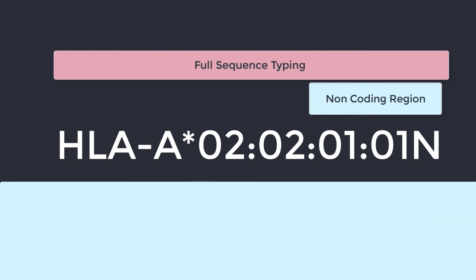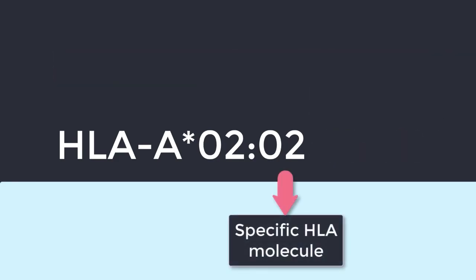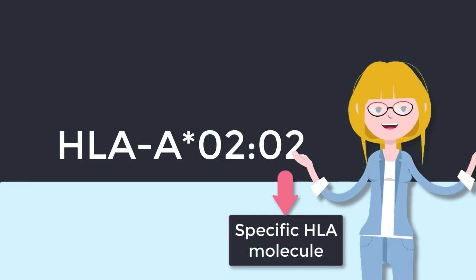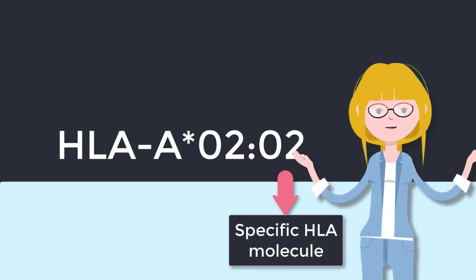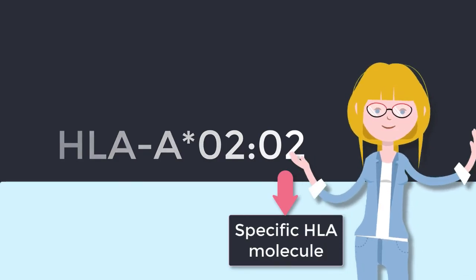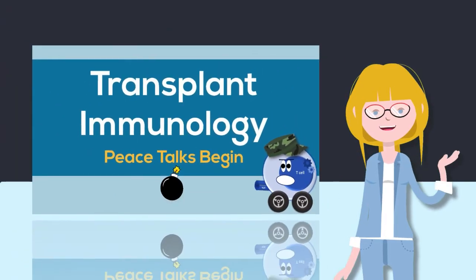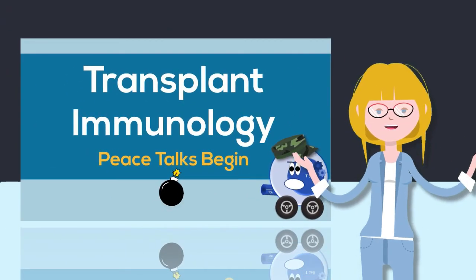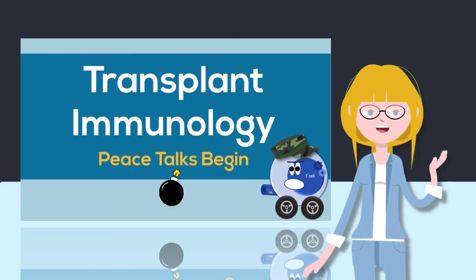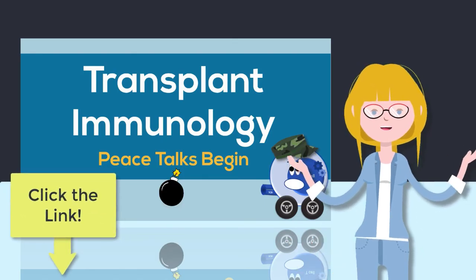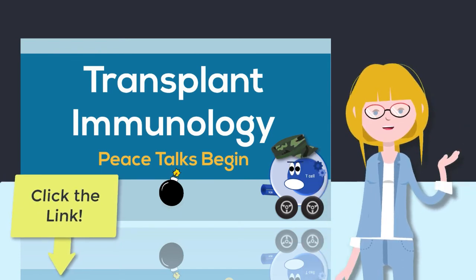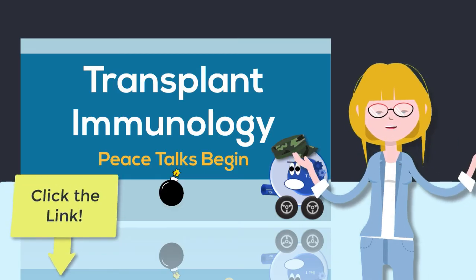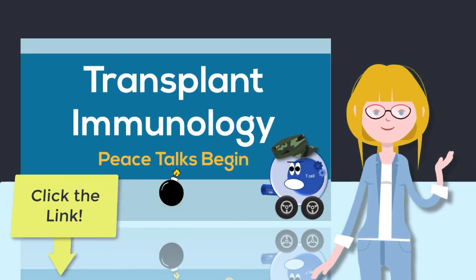Ultimately the genetic differences which affect the structure of the molecule are going to be the most relevant to how we use this genetic information in clinical practice — whether for describing disease associations or in transplant cross-matching. If you'd like to learn more about transplant immunology and take a deeper dive into molecular typing where transplants are concerned, we have a new series coming out called Transplant Immunology: Peace Talks Begin. You can check out all the details using the link below.